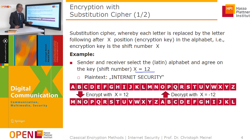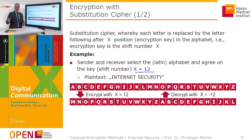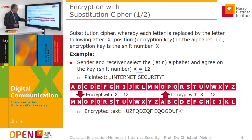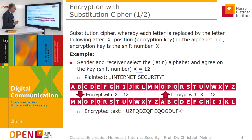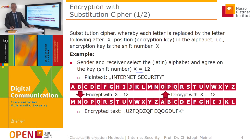For decryption, we shift in the other direction. The receiver takes the ciphertext and replaces each letter by the letter shifted by minus 12 positions in the alphabet. Applying the substitution cipher with key X equal to 12 to 'internet security' produces a completely unreadable ciphertext, and nobody who doesn't know how it was produced has any chance of reading it.